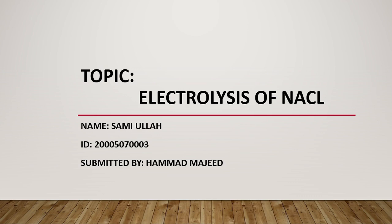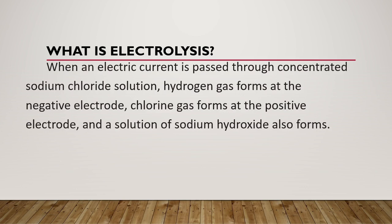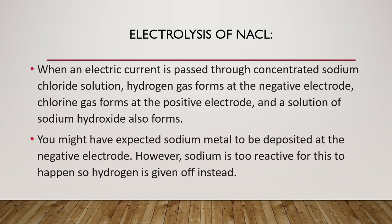When an electric current is passed through concentrated sodium chloride solution, hydrogen gas forms at the negative electrode, chlorine gas forms at the positive electrode, and a solution of sodium hydroxide also forms.